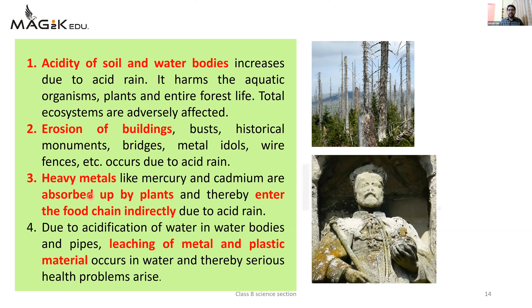Mercury, cadmium are absorbed by the plants and thereby enter the food chain - indirectly entering the food chain.